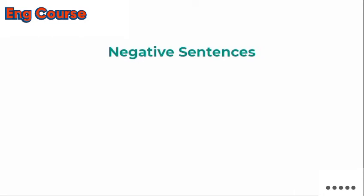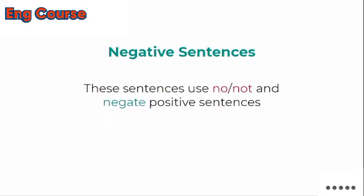The other type is negative sentences. In negative sentences, we use 'no' or 'not'. In the case of 'no' or 'not', we will negate the positive sentences — turning them into negative sentences.